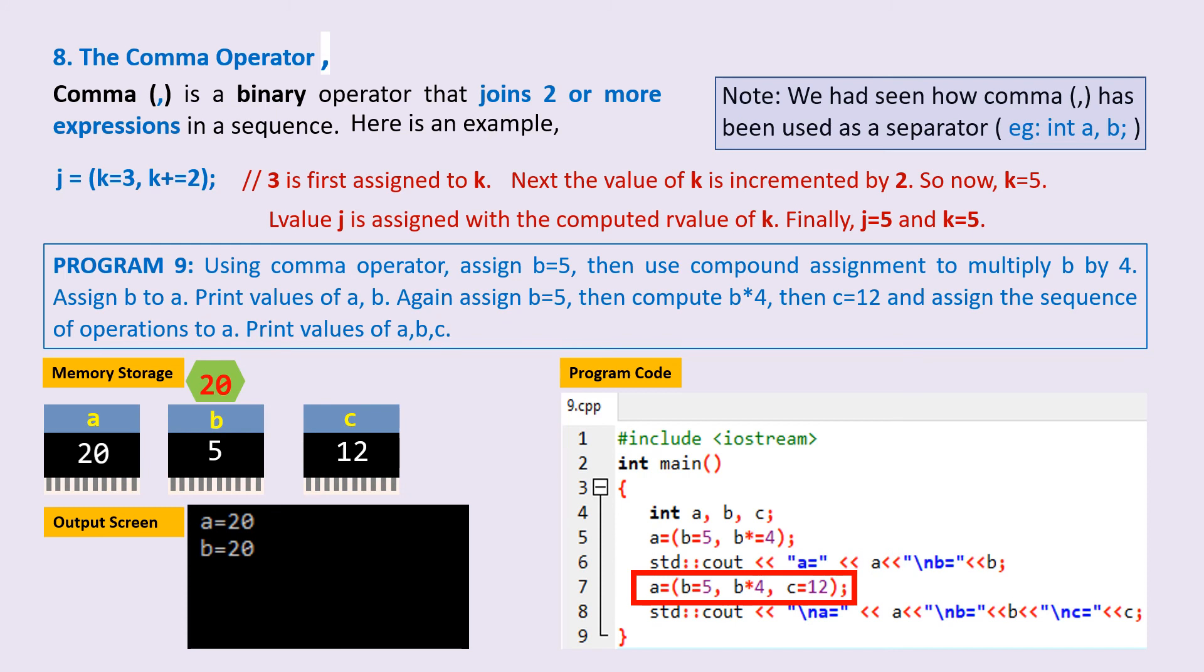The result of entire computation on the RHS is then assigned to a on the LHS. But wait, RHS has value 5 in b, there is 20 as a floating value, and there is 12 in c. Which value would be assigned to a? It's the last executed part, and that is c=12.